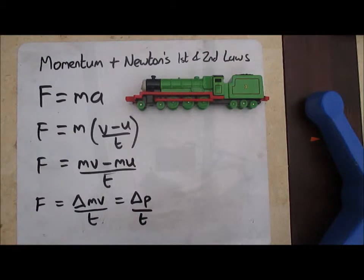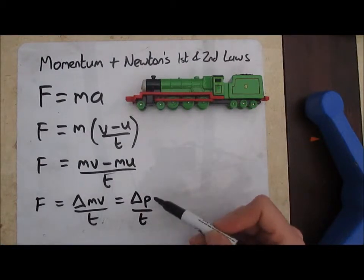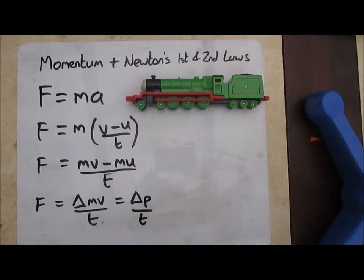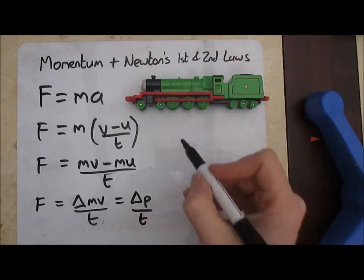So force is delta mv over t, which would be delta p for momentum divided by t. We've actually got ourselves a brand new definition for force here where force is the rate of change of momentum, and that's actually probably a more useful definition of force than anything we've met before.